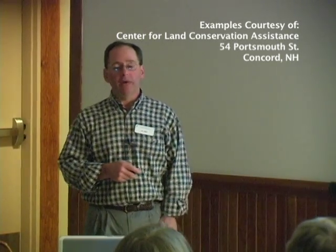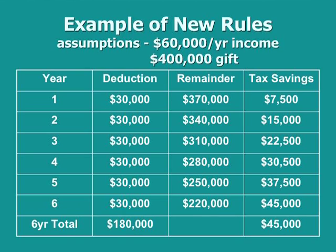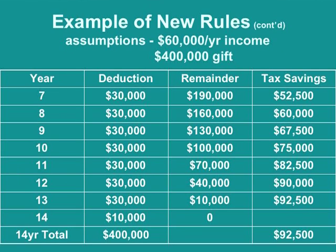Under the new rules, I ran this with the same $60,000 income but a $400,000 gift — a more realistic gift given today's property values. Now we can deduct up to 50% of adjusted gross income, so $30,000 a year is being chipped out of that $400,000. Working through this — it takes two pages now — for a $400,000 gift with $60,000 a year income, we've deducted the whole thing by the end of year 13. Tax savings cranked up significantly — $92,500 — though of course it was a much bigger gift.